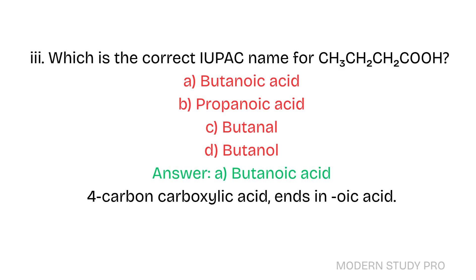Question 3: Which is the correct IUPAC name for CH3CH2CH2COOH? A. Butanoic acid. B. Propanoic acid. C. Butanol. D. Butanal. Answer: A. Butanoic acid. For a 4-carbon carboxylic acid, the name ends in -oic acid.